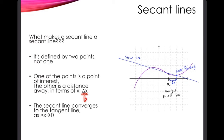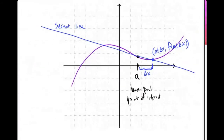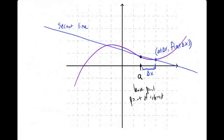What makes this different from a tangent line? Around the point of interest I can really tell the difference between the secant line and the curve. The secant line is defined by two points — the base point and a second point defined by a distance delta x from the base point. Another name for delta x is often h.